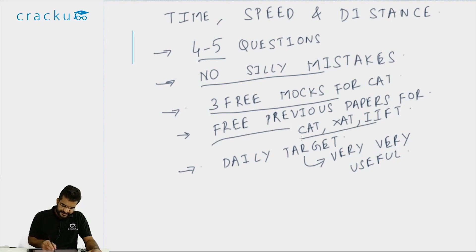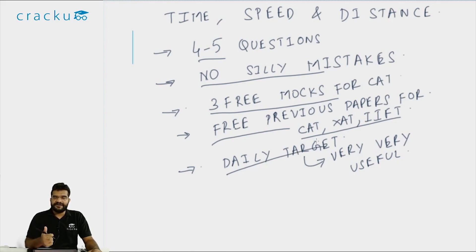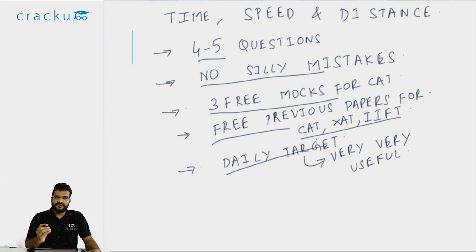This year we have started something which many students are finding extremely useful. Every day thousands of students are taking this — it is called the daily target. Every day we are providing one LRDI set, one reading comprehension set and 5 questions per quant from the same topic along with video solutions. This is completely free for the first 24 hours. The link for daily target is given in the video description below.